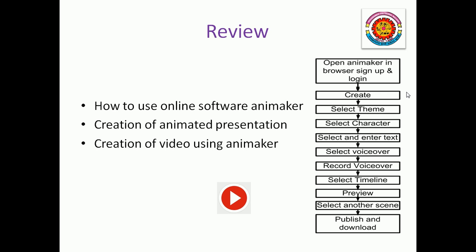Review of this video: we saw how to use online software Animaker, creation of an animated presentation, and creation of a video using Animaker. As per our flowchart: open Animaker in browser, sign up for the first time, then login, then use create a video or create animation, then select theme, select character, select his action, then enter text, select voiceover, record voiceover, select timeline as per your theme, then preview your scene. If you want another scene, then add a scene and use the same procedure for another scene. Then publish and download the video. This is the throughout procedure to make the video in Animaker.